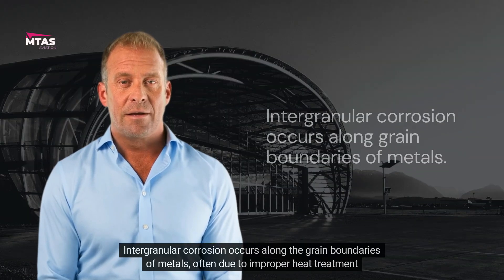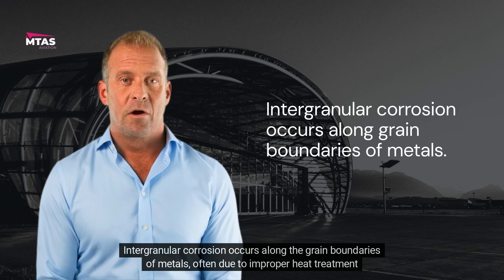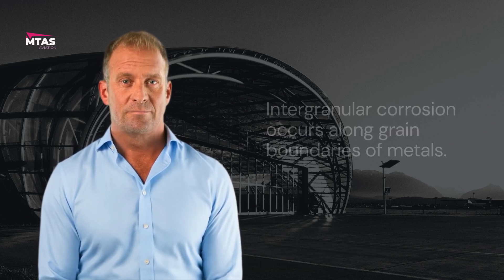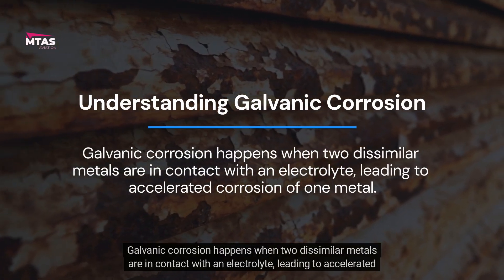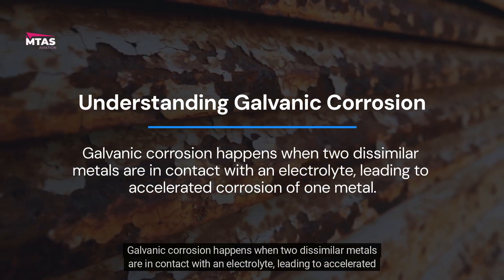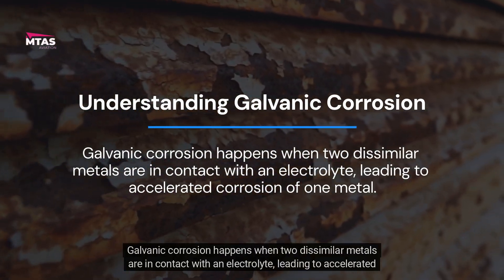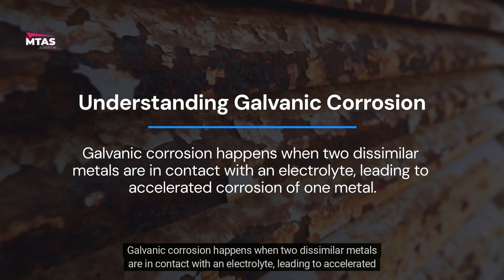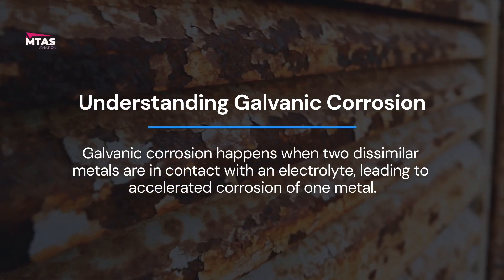Intergranular corrosion occurs along the grain boundaries of metals, often due to improper heat treatment. Galvanic corrosion happens when two dissimilar metals are in contact with an electrolyte, leading to accelerated corrosion of one metal.